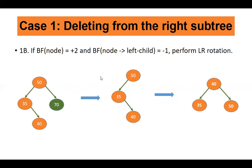Subcase 2: again deleting 70 from the right subtree. After deleting 70, the balance factor of node 50 is +2, and balance factor of node's left child 35 is -1 because 35 has a right child. So you perform a left-to-right rotation. The new root becomes 40, with 35 as the left child and 50 as the right child.